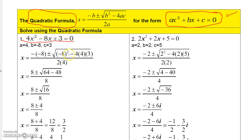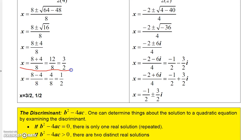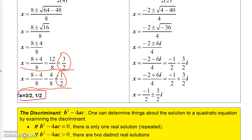So we have 8 plus or minus the square root of 64 minus 48, which is the square root of 16, all over 8. That gives 8 plus or minus 4 over 8. For the plus case: 8 plus 4 over 8 is 12 over 8, which reduces to 3-halves. For the minus case: 8 minus 4 over 8 is 4 over 8, which is 1-half. So the two solutions are x equals 3-halves and x equals 1-half.